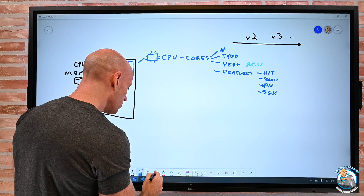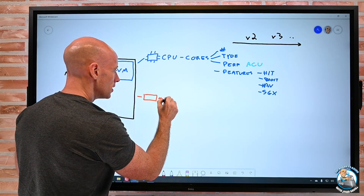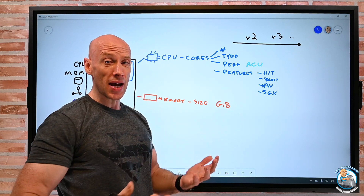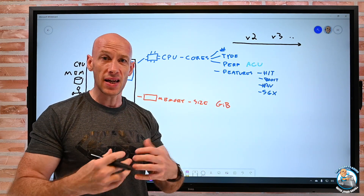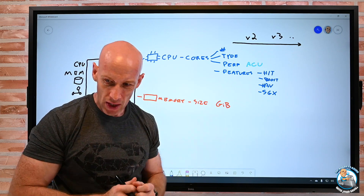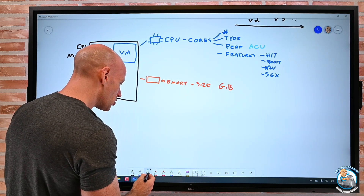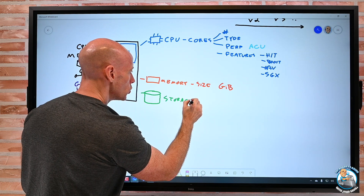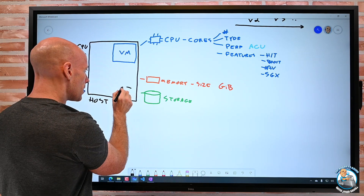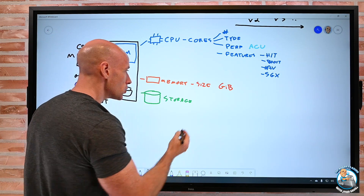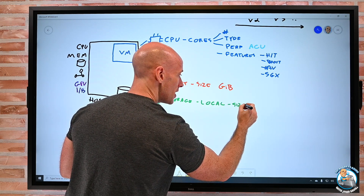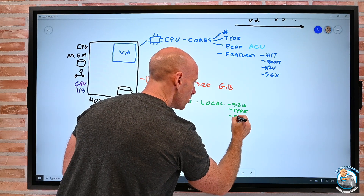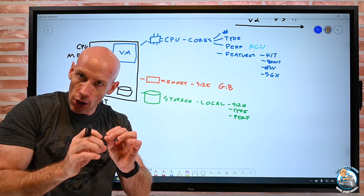Then we have memory. Memory is typically measured in GiB — gibibytes — which is the true 1,024 powers of 2, rather than gigabytes which is 1,000. That's why you see GiB. And then another dimension is storage. There's local storage to the host; portions of that can be given to the virtual machine. With local storage there's size, there's type — is it a hard disk drive like the old A series, or is it SSD? There's performance measured in IOPS, throughput, and latency.